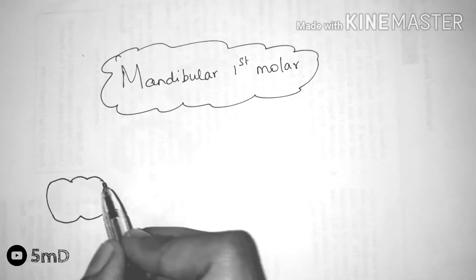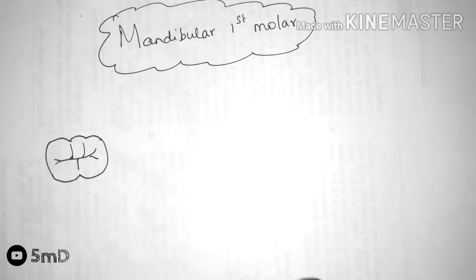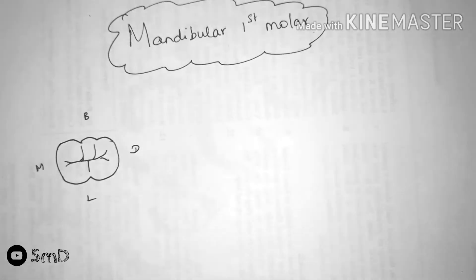To start with the occlusal aspect of the mandibular first molar, it has 5 cusps, 3 buccal and 2 lingual.